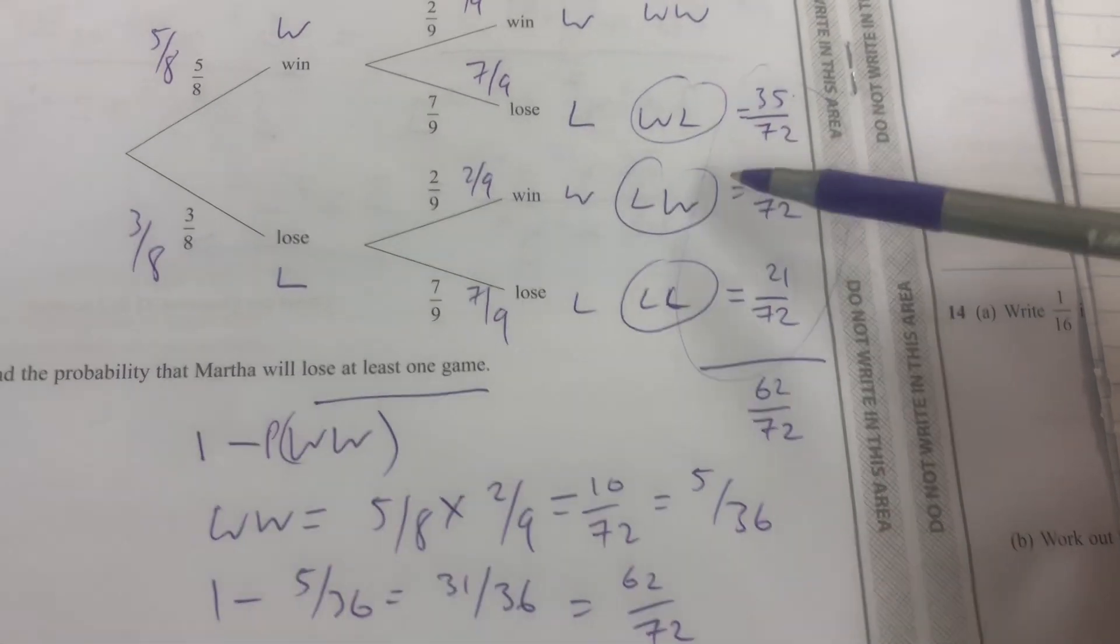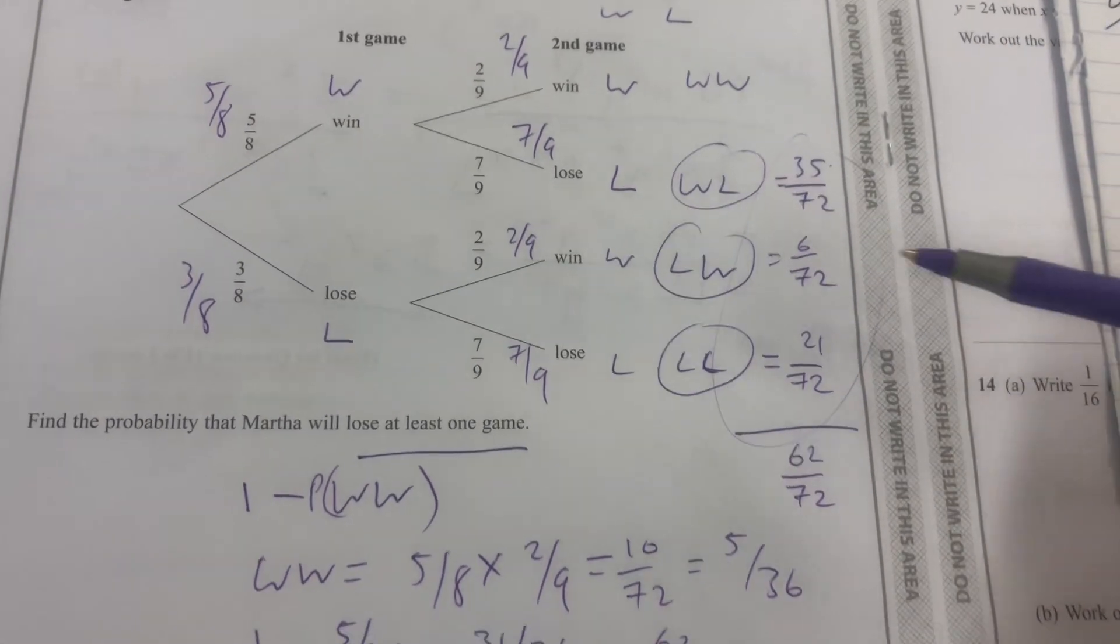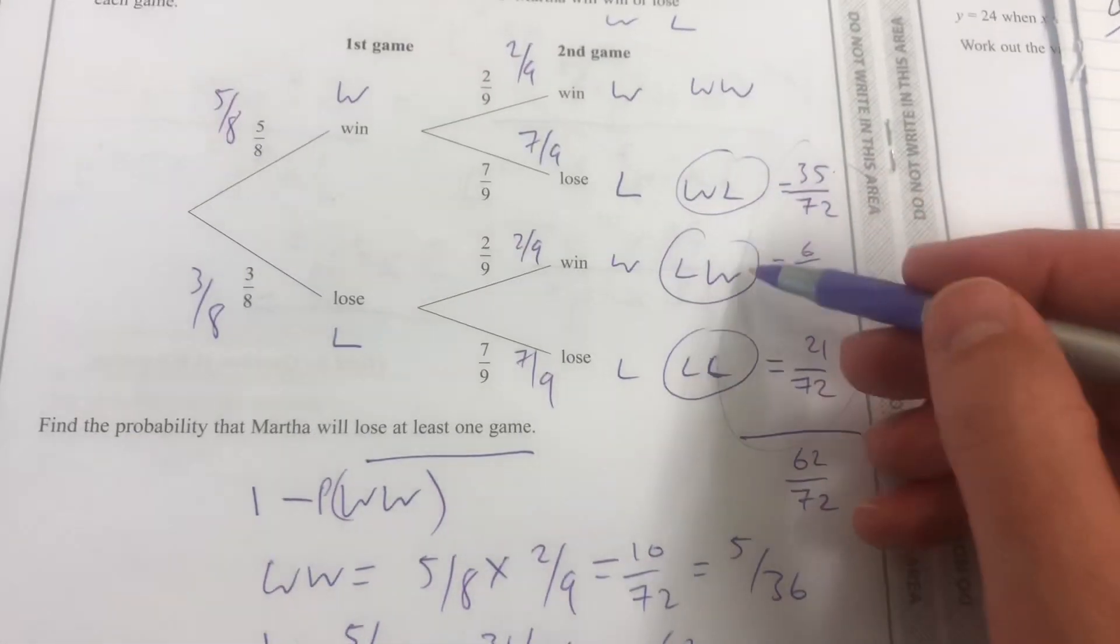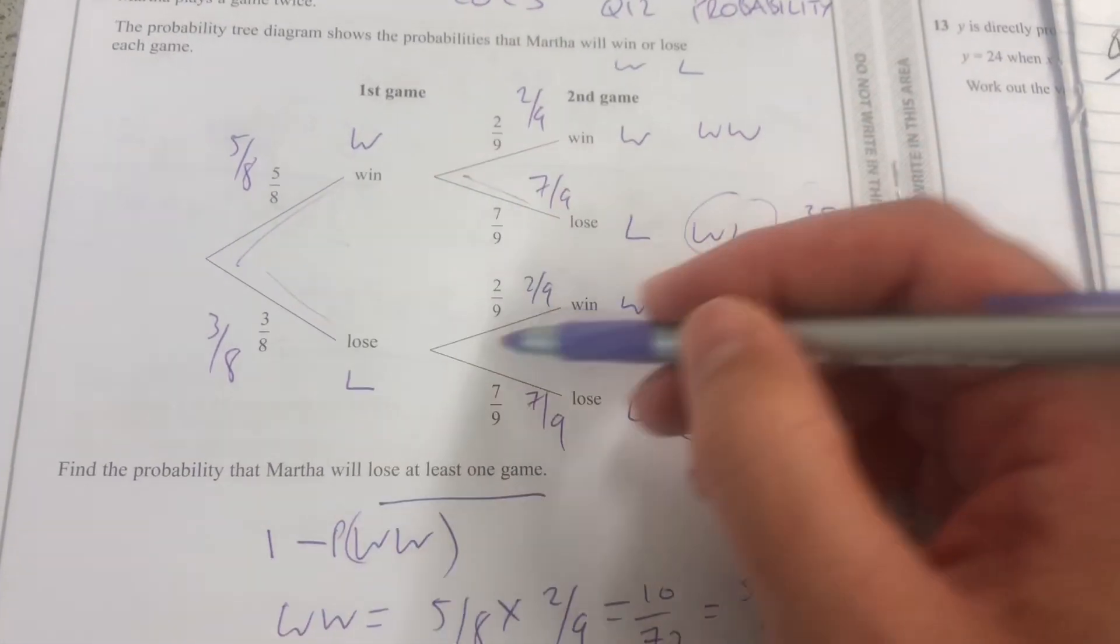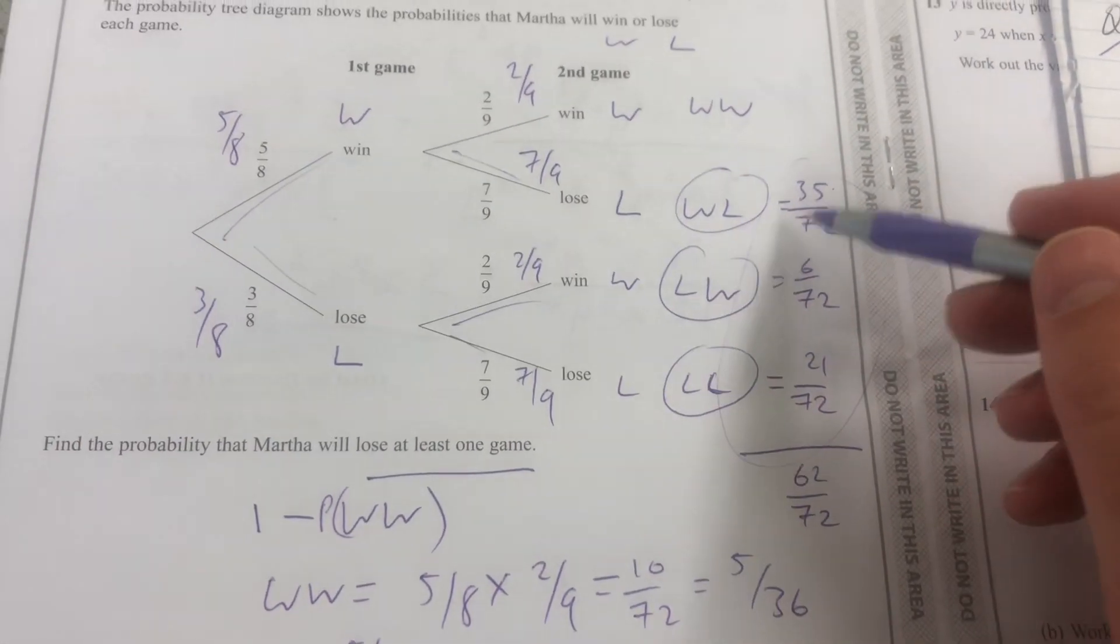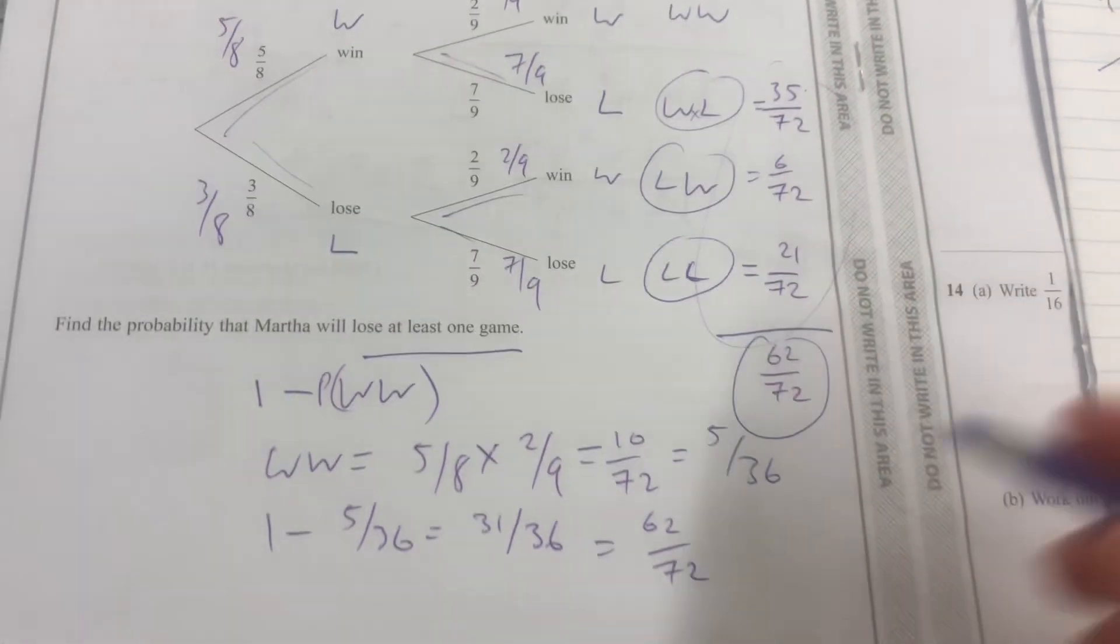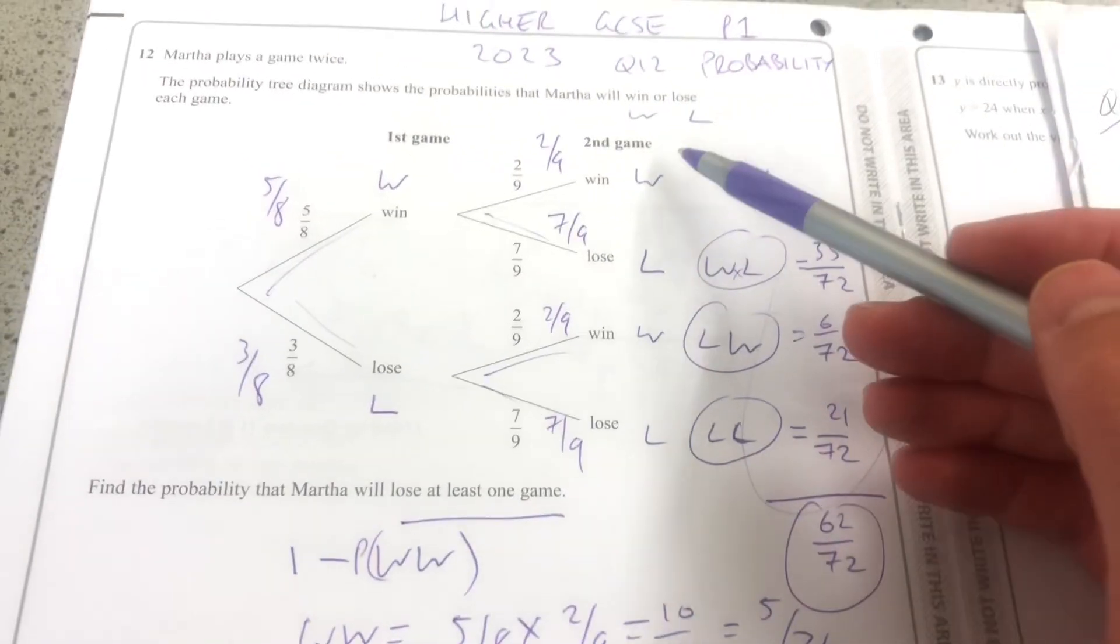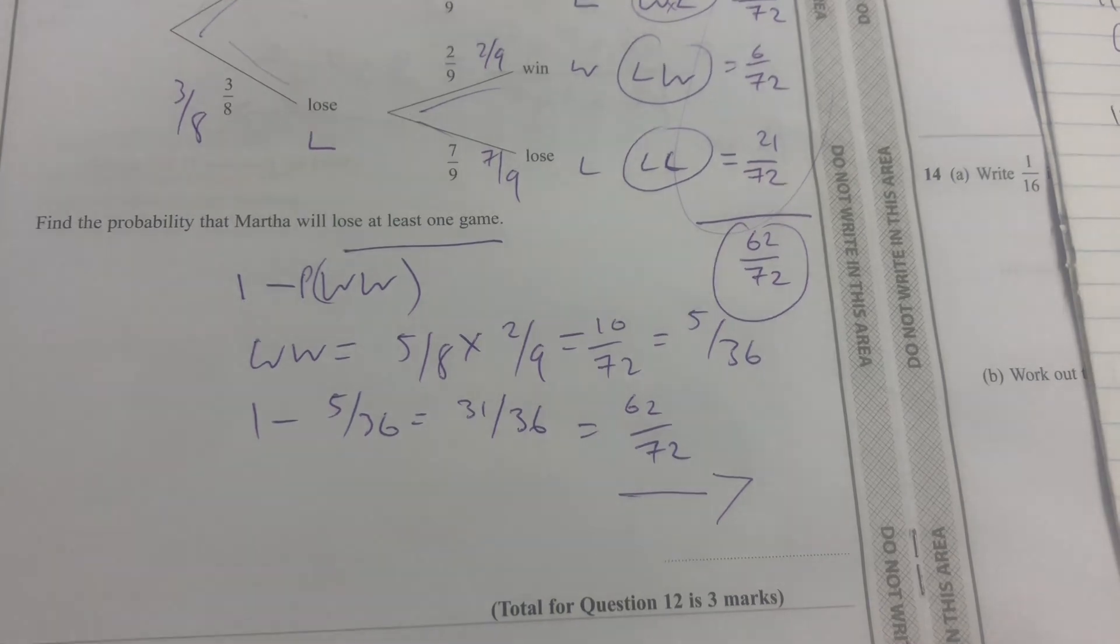So the probability that they lose at least one game is win and lose, or lose and win, or lose both. They lose at least one game. I work out the probability going across for each of those, I multiply, you have to multiply those, and then I add them all up. Or in this case, I take them all away, take the win-win away from one. I still get 62 over 72.